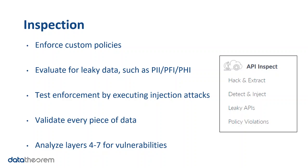Once Discover has collected and grouped all potential issues, the tool will move into the Inspect phase. We will begin with any custom policies your team has enforced, as well as evaluate for leaky data or PII, PFI, and PHI. We validate every piece of data as well as analyze layers four through seven for vulnerabilities in your application.